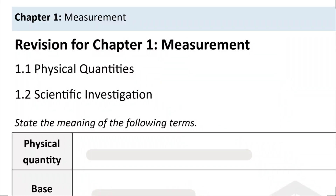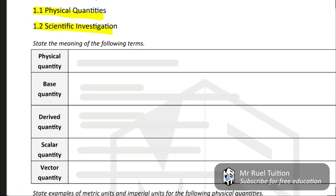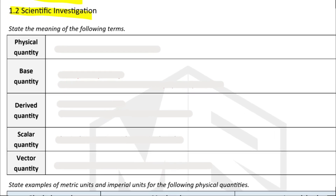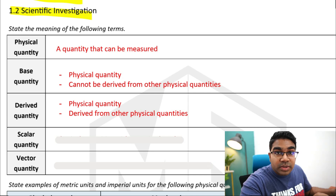Under measurement we have two main topics: physical quantities and scientific investigation. First, let's go through some definitions for this whole topic. A physical quantity is basically something that can be measured. Under physical quantity we have base quantity as well as derived quantity. A base quantity is a physical quantity that cannot be derived from any other physical quantities, whereas a derived quantity is a physical quantity that is derived from other physical quantities.